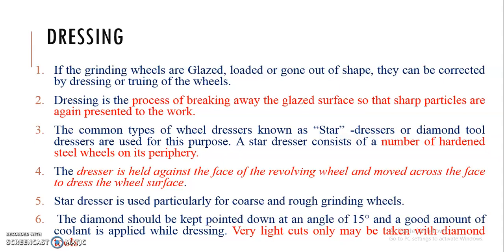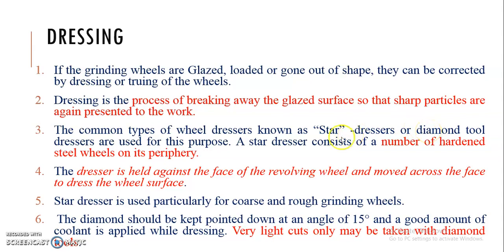We are improving the cutting ability of the grinding wheel with the help of dressing and truing operations. Whenever a grinding wheel becomes glazed or loaded or gone out of shape, they are corrected by dressing and truing. Dressing is the process of breaking away the glazed surface so that sharp particles are again presented to the workpiece. The common types of wheel dresser are the star dresser or diamond tool dresser.